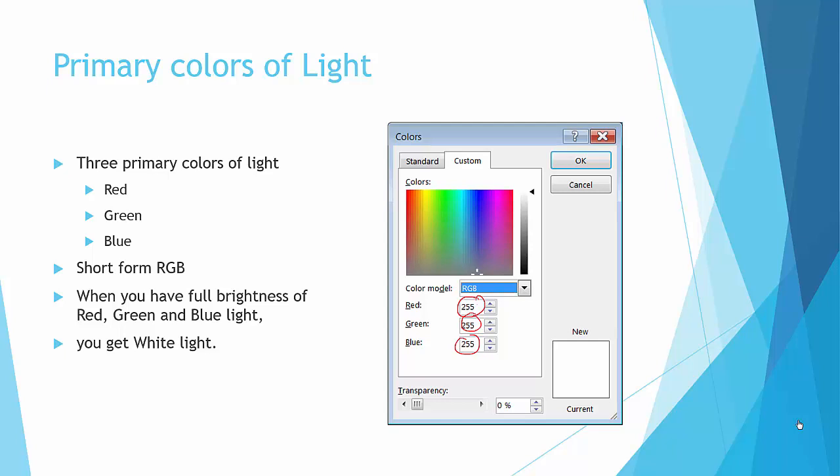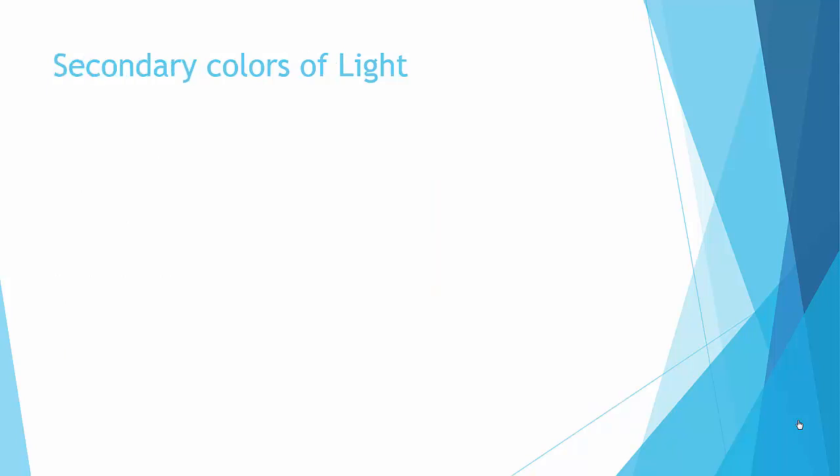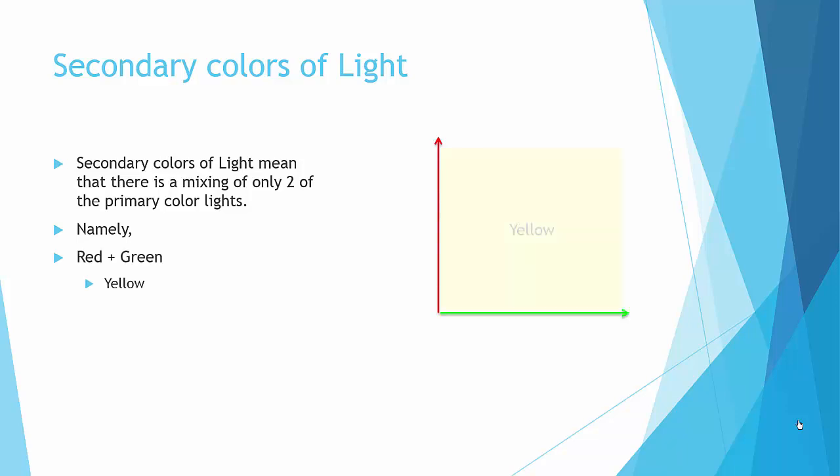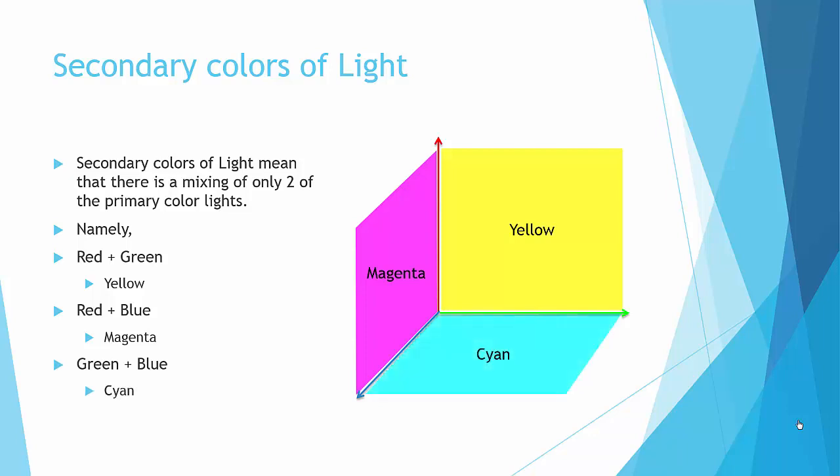Secondary colors of light means that there's actually just mixing of only two of the primary color lights. Namely, if you have red plus green, you have yellow. If you have red plus blue, you have a color called magenta. You have blue plus green, you have a color called cyan. So these three colors are known as the secondary colors of light, where you mix two of them.